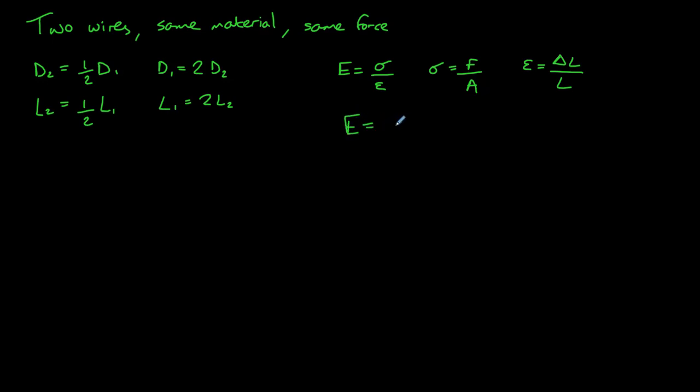So we can combine those equations together to produce one equation here. So here E equals, so the Young modulus is equal to force multiplied by length divided by the cross-sectional area multiplied by the extension. We also know that that cross-sectional area again is pi D squared divided by 4.